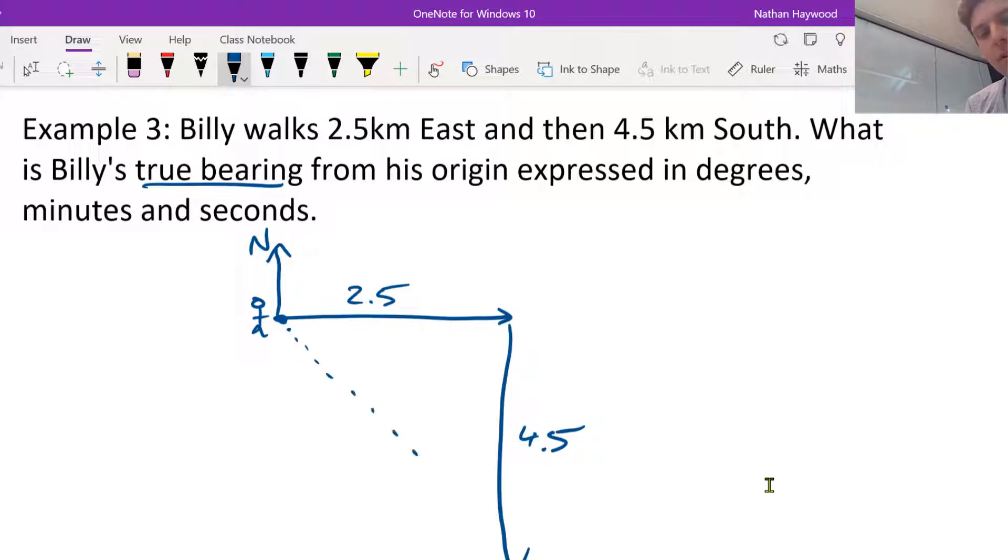So it wants that full angle in there. Okay, so we have to figure out this angle here. Let's call it x, and we will have to add it to the 90 degrees to get the true bearing.